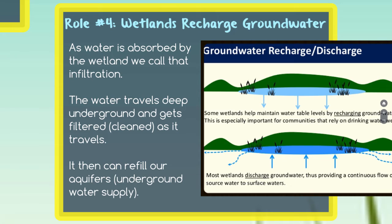The fourth role you should remember is wetlands recharge groundwater. Groundwater is water found underground. Some water flows through the surface in our watershed and some flows underground, and wetlands can help recharge that underground water. As water is absorbed by the wetland, we call that infiltration. The water travels deep underground and gets filtered as it travels through the soil layers — think of it like a Brita filter, where water gets cleaner as it passes through different layers. Wetlands can refill our aquifers, which are porous rocks underground that hold a lot of water, and we can drill into aquifers to make wells to access clean water.